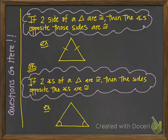The first theorem says if two sides of a triangle are congruent, then the angles opposite those sides are congruent. In this triangle we have two sides that are congruent — we can see that by the tick marks. The angles opposite these two sides will also be congruent. In an isosceles triangle where two sides are congruent, these angles are called the base angles, and they are going to also be congruent. This is true for any isosceles triangle.